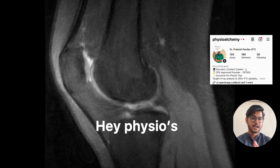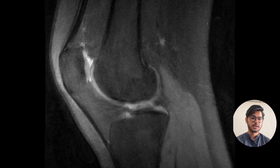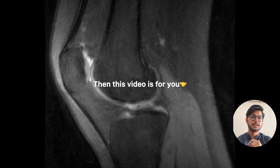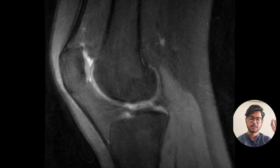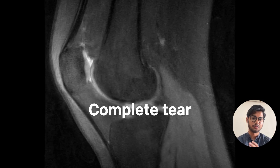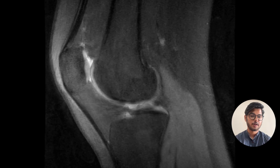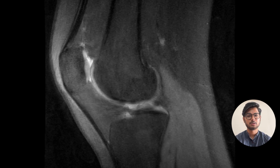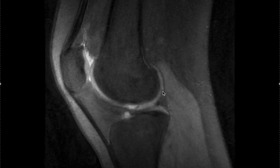Hello physios, are you still looking at the MRI reports first before looking at the MRI scans, and ignoring the MRI scans just to look at the ACL continuity? This video is for you, because today I will teach you how to track down the entire normal ACL continuity on the MRI scan, and also how to look at a complete tear of the ACL ligament. After spending four to five minutes in this video, you will be able to track down the entire ACL continuity without any help. In the end I will also ask a question, so let's start the video.